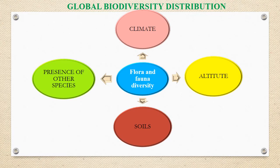Every biota on this planet Earth needs some basic requirements for sustenance of life and are dependent upon various abiotic factors. The status of biodiversity at any level is dependent upon some physical or at times biological environment. Flora and fauna, which are considered a very important part of biodiversity at any level, depends on various factors such as climate, altitude, soils, and presence of other species. There is influence of all these factors on any life form belonging to flora and fauna diversity.